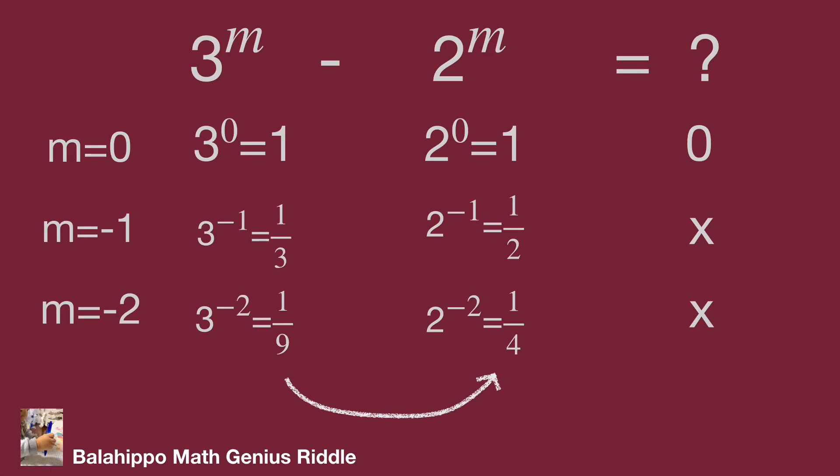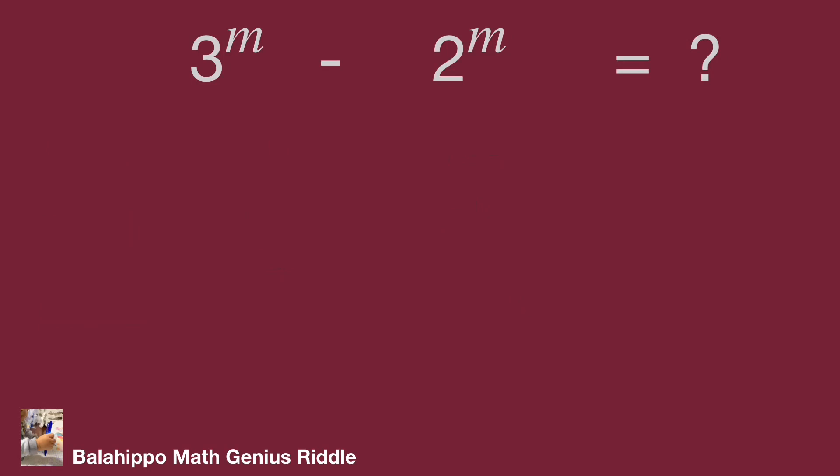Then let's take a look at m as positive integers. m equals 1: 3 power m equals 3 power 1 equals 3, 2 power m equals 2 power 1 equals 2. 3 power 1 minus 2 power 1 equals 1.